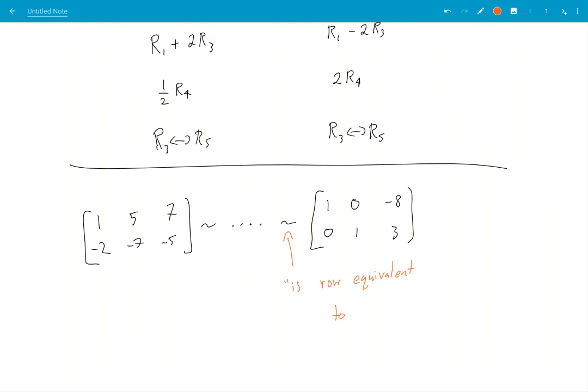Okay, which means that if I start at one matrix, I can do some sequence of elementary row operations and arrive at the second matrix.